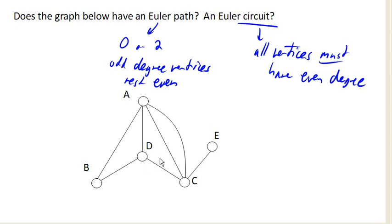So here, notice that this vertex has degree 2, this vertex has degree 3, this one has degree 1, 2, 3, 4, this one has degree 1, and this one has degree 4.